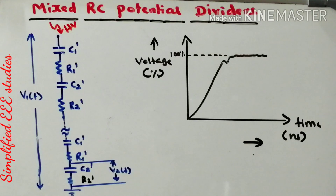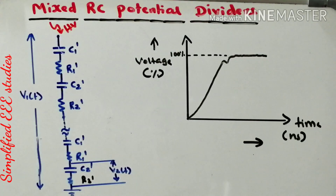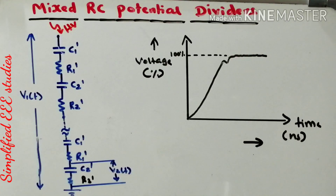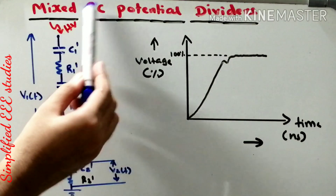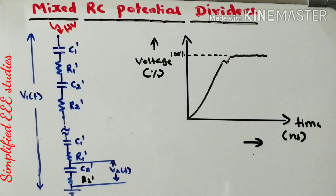If you use a Mixed RC combination, definitely the step response will be improved. The step response is the time behavior of the output of a general system when the input changes from 0 to 1 in a very short duration of time. By using RC combination, you can also define the time constant properly, which further improves the step response.